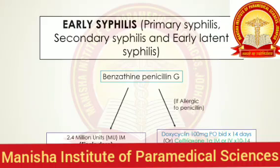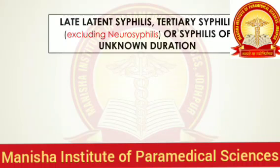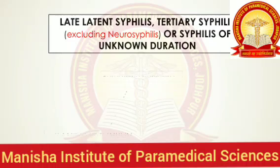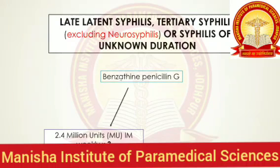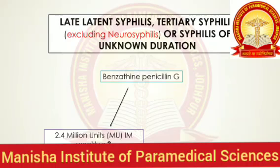Now let's talk about how we treat late latent syphilis, tertiary syphilis excluding neurosyphilis, or syphilis of unknown duration. The treatment is the same as for early syphilis — we still use benzathine penicillin G at the same dose of 2.4 million units intramuscularly. But the only difference is that instead of a single dose, we use 3 doses separated by one week.